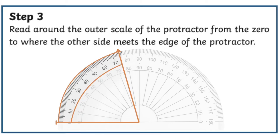Then, read around the outer scale of the protractor, from the zero to where the other side meets the edge of the protractor.